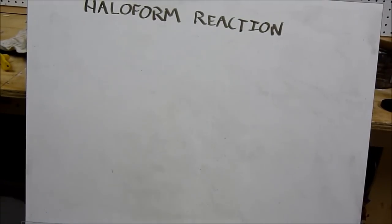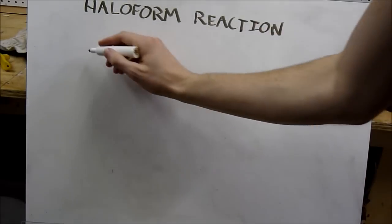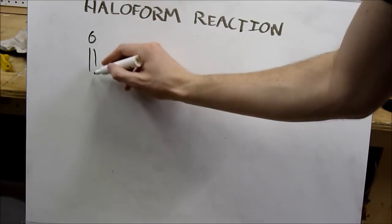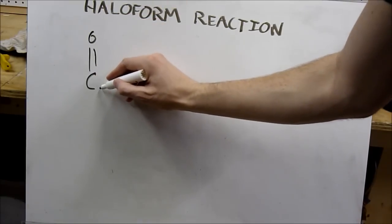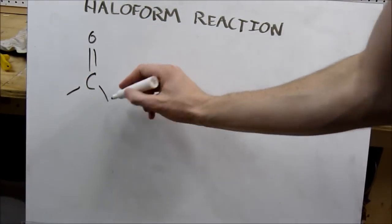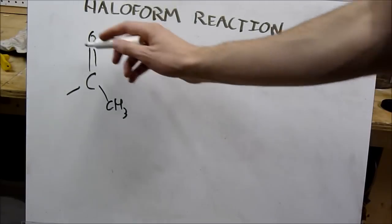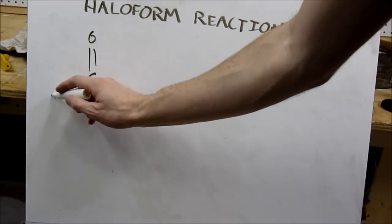While we're waiting, I decided to teach a little bit about the haloform reaction based on what I know. The haloform reaction works by forming haloforms from ketones, specifically methyl ketones. A ketone has a double-bonded oxygen to a carbon with two groups attached to it. A methyl ketone will have at least one methyl group on it — a methyl group is CH3. So this is methyl-something ketone, and we can put an R here, where R stands for any chain of hydrocarbons.